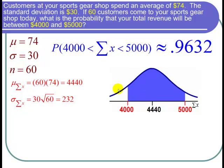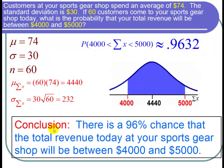The probability that the sum is between 4000 and 5000 is approximately 0.9632. I can conclude that there is about a 96% chance that the total revenue today at your sports gear shop will be between $4,000 and $5,000.